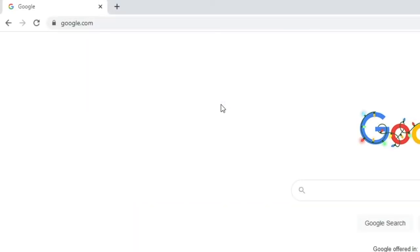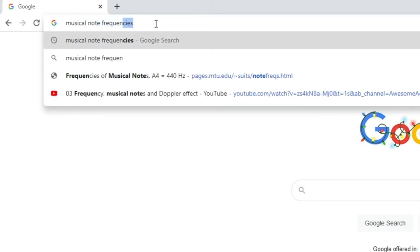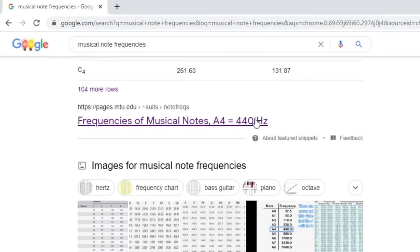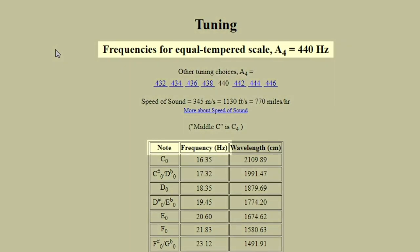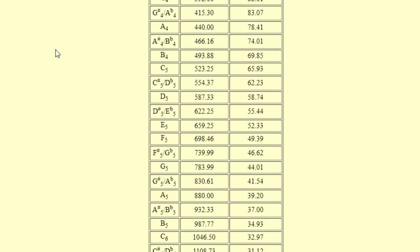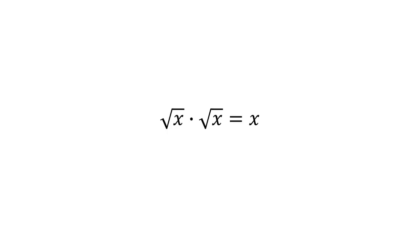The standard frequency of all notes in modern tuning can easily be found on Google. But how are they calculated? Before that, I should give another mathematical reminder, which is multiplications of roots.